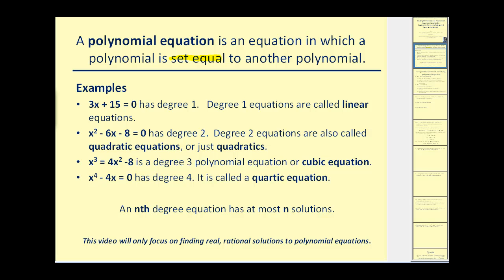Here are some examples of polynomial equations. Three x plus fifteen equals zero is a degree one polynomial equation, commonly called a linear equation. X squared minus six x minus eight equals zero is a degree two polynomial equation, most often called a quadratic equation. X cubed equals four x squared minus eight is a degree three cubic equation. And x to the fourth minus four x equals zero has degree four, called a quartic equation.